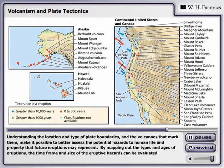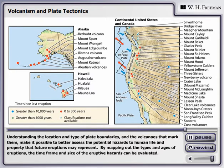Understanding the location and type of plate boundaries and the volcanoes that mark them make it possible to better assess the potential hazards to human life and property that future eruptions may represent. By mapping out the types and ages of eruptions, the time frame and size of the eruptive hazards can be evaluated.